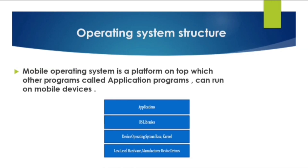In the operating system structure, the mobile operating system is a platform on top of which other programs — called application programs — can run on mobile devices. The layers are: first, applications; second, OS libraries; third, device operating system; and fourth, low-level hardware manufacturer device drivers.